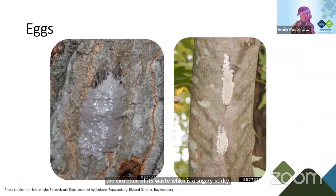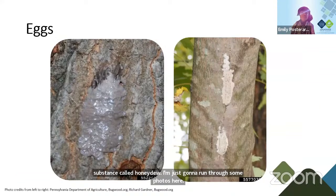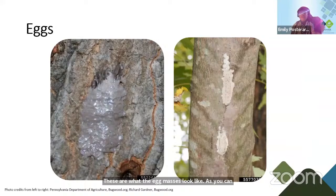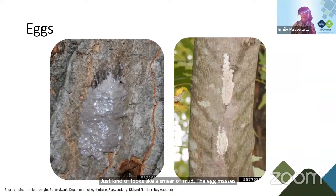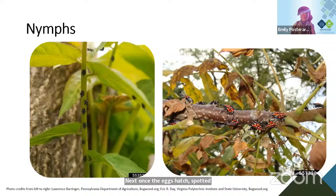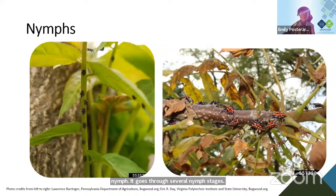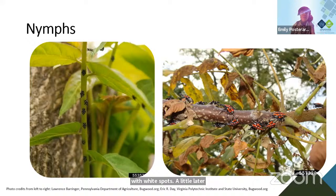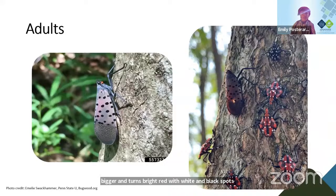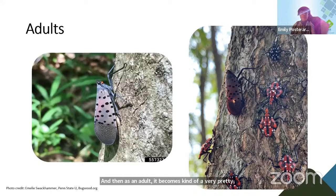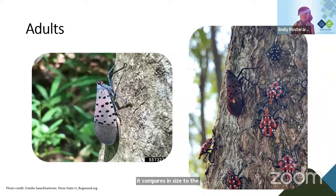Here are photos of what the egg masses look like — they're pretty inconspicuous, just kind of a smear of mud. The egg masses can be spread unnoticed very easily. Once the eggs hatch, spotted lanternfly becomes a nymph and goes through several stages: starting as tiny black nymphs with white spots, later getting bigger and turning bright red with white and black spots. As an adult it becomes a very distinctive, charismatic insect — you can see how it compares in size to the nymphs.